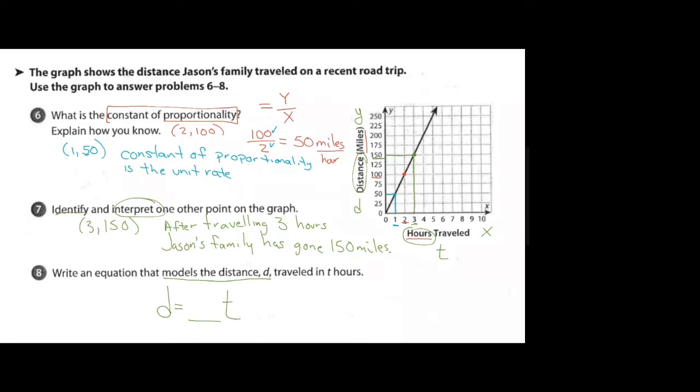Well in this case I need to know what I need to multiply t by to get to the distance traveled, and we have already solved that and that is the unit rate that we got.